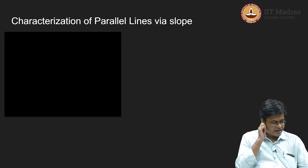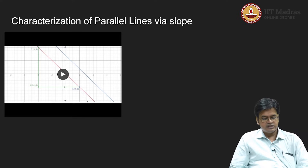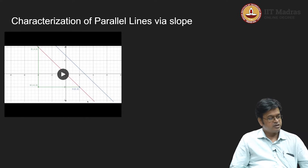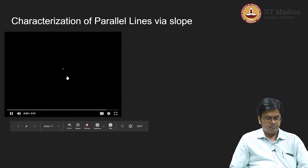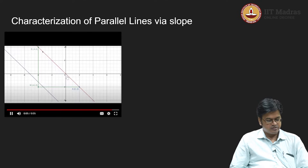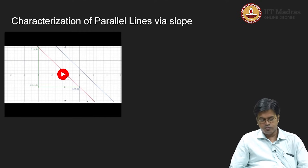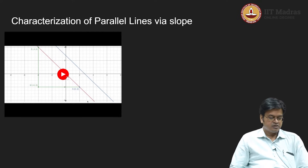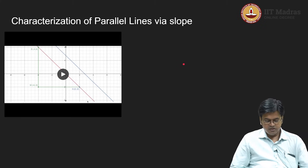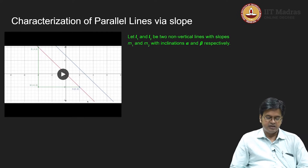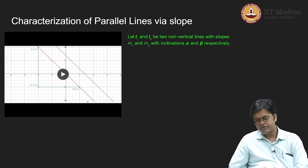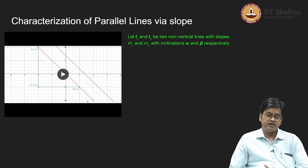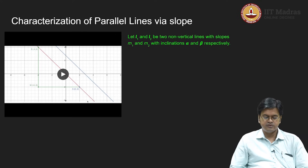Let us go to the next characterization of parallel lines via slope. As you can see in this image, there are two parallel lines. They have the same inclination, but they are not unique — that is what we figured out. There can be infinitely many lines with the same inclination. What remains constant is the inclination; it is the same for parallel lines. Let L1 and L2 be two non-vertical lines. Vertical lines have an angle of 90 degrees for which the concept of slope is undefined.